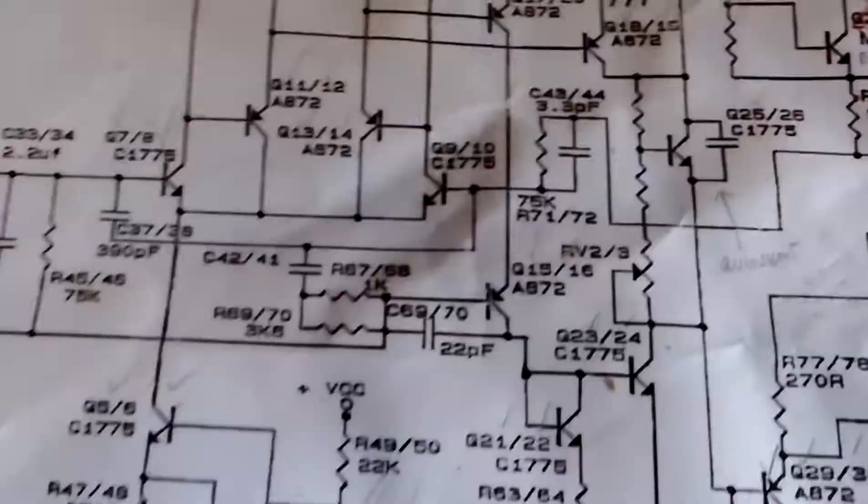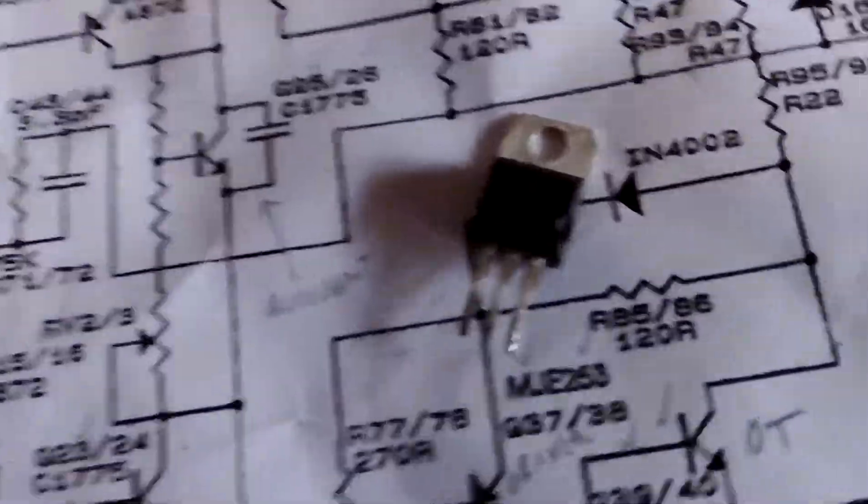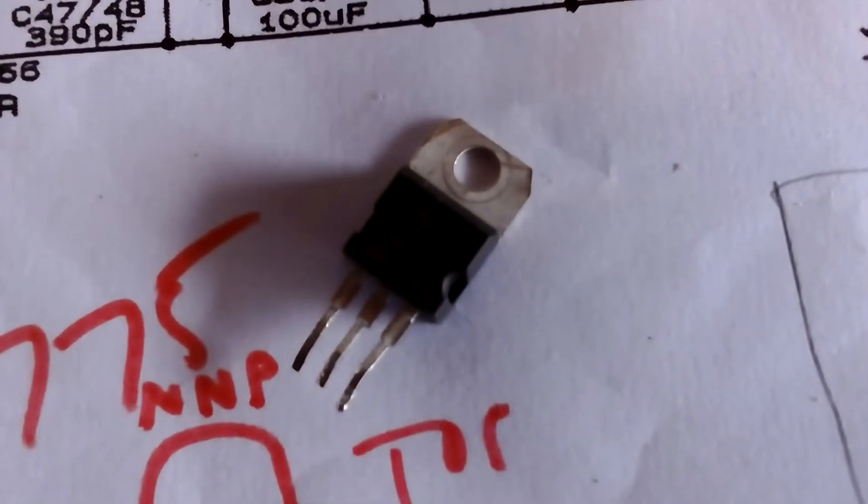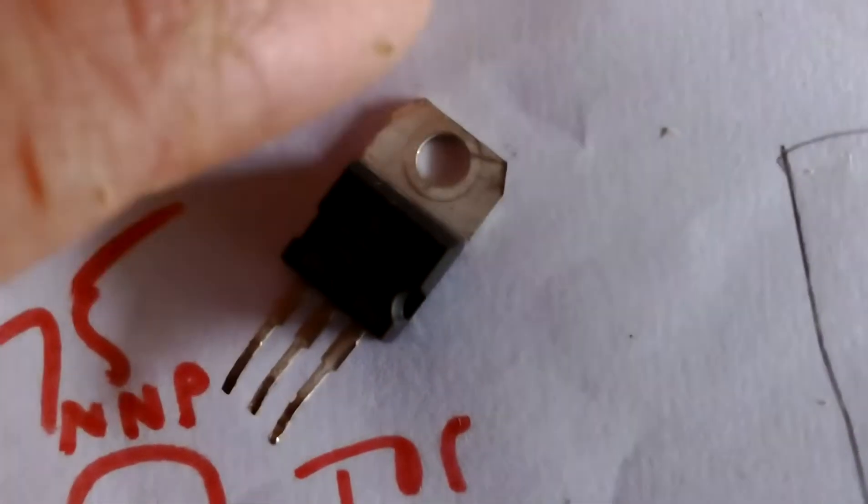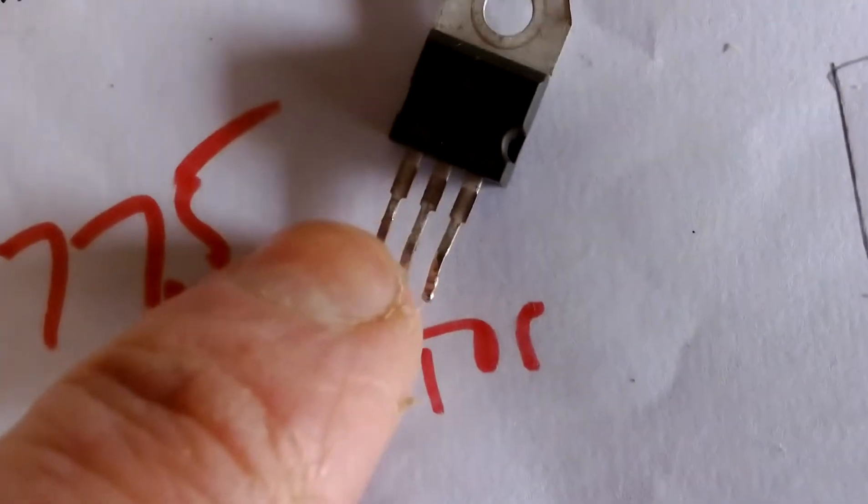So that's kind of what they look like. This was one of the ones I've taken out. That's one of the main output transistors. You can see there's got this metal bit that attaches to a heat sink, and yeah, it wasn't giving me the right readings at all in the circuit.